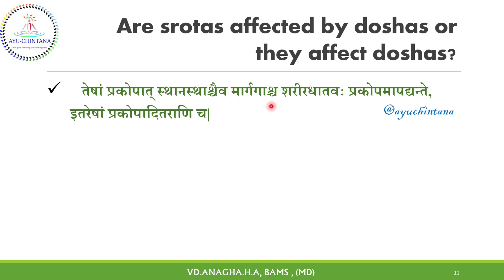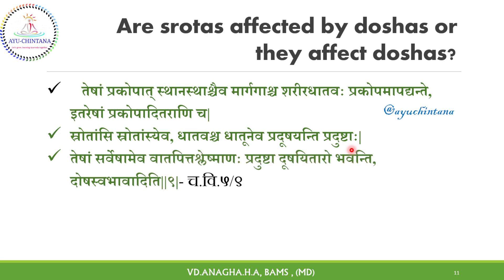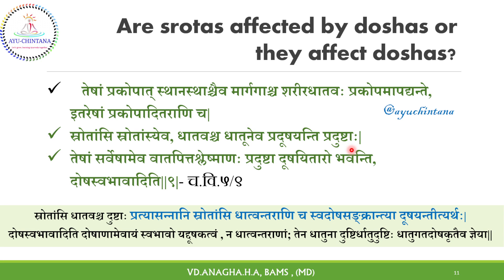Margagascha means Dhatuvaha or Doshavaha Srotis, where Margha is the synonym for Srotis. Srotis alters the nature of Dhatus and causes Prakopa. With this Prakopa, it may be limited to one Dhatu or its Srotis, or can involve more Dhatus and their respective Srotis. Acharya himself clarifies: Srotamsi Srotamsyaiva Dhatavascha Dhatu Neva Pradushayanti Pradushthaha — previously hampered Srotis can affect subsequent Srotis, and already hampered Dhatu can alter the normalcy of further Dhatu, all because of Doshaprakopa, which in turn is caused by Ahita Ahara and Ahita Vihara. Thus, it is only the nature of Doshas to cause Doshana.